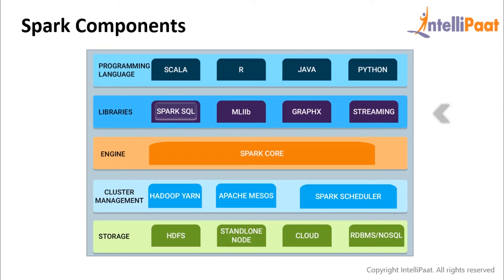MLlib is Spark's machine learning library, which eases the deployment and development of scalable machine learning pipelines like summary statistics, correlation, feature extraction, and many others. The GraphX component of Spark helps data scientists work with graphs and non-graph sources to achieve flexibility and resilience in graph construction and transformation. Finally, the Spark Streaming component allows us to perform both batch processing and streaming of data in the application.